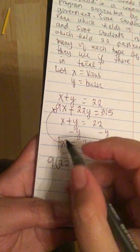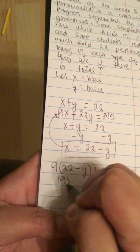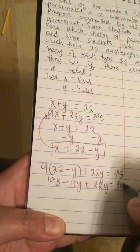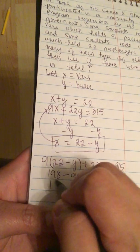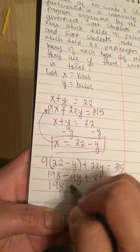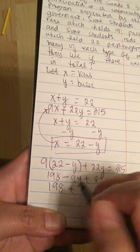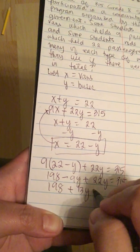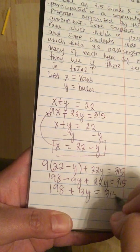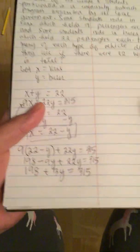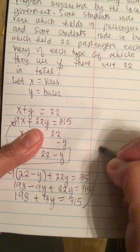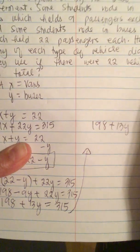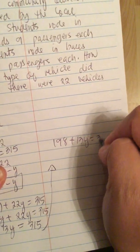So 9 times 22 is 198 minus 9y plus 22y is equal to 315. So we have 198 plus 22 minus 9y is 13y is equal to 315. So we have 198 plus 13y is equal to 315.